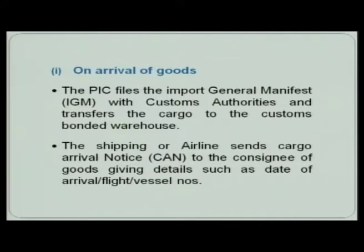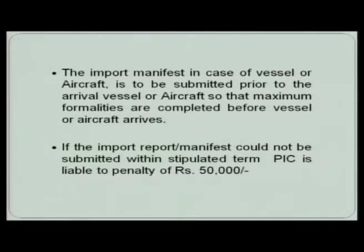Now we move to the import procedure. As and when goods arrive within the territory of India, the person in charge of the vessel, aircraft, train, or vehicle must inform customs authorities that the cargo is within the territory of India. Then the shipping or airline sends a cargo arrival notice to the consignee, giving details of the date of arrival of the consignment and details of the vehicle. Thereafter, the import manifest for a vessel or aircraft is to be submitted prior to the arrival of the vessel or aircraft, so that maximum formalities are completed before arrival.